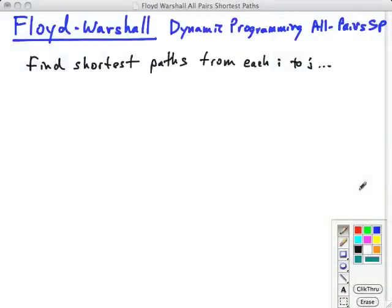The approach we just looked at builds up the small problems of finding shortest paths from each i to j involving only one edge, and then involving one or two edges, and then involving one or three edges. Floyd-Warshall is going to differ.